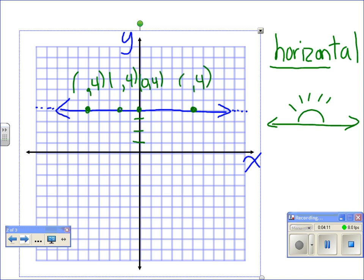And the x value is going to change depending on where we are. So this would be a horizontal line with the equation, y is always equal to 4.